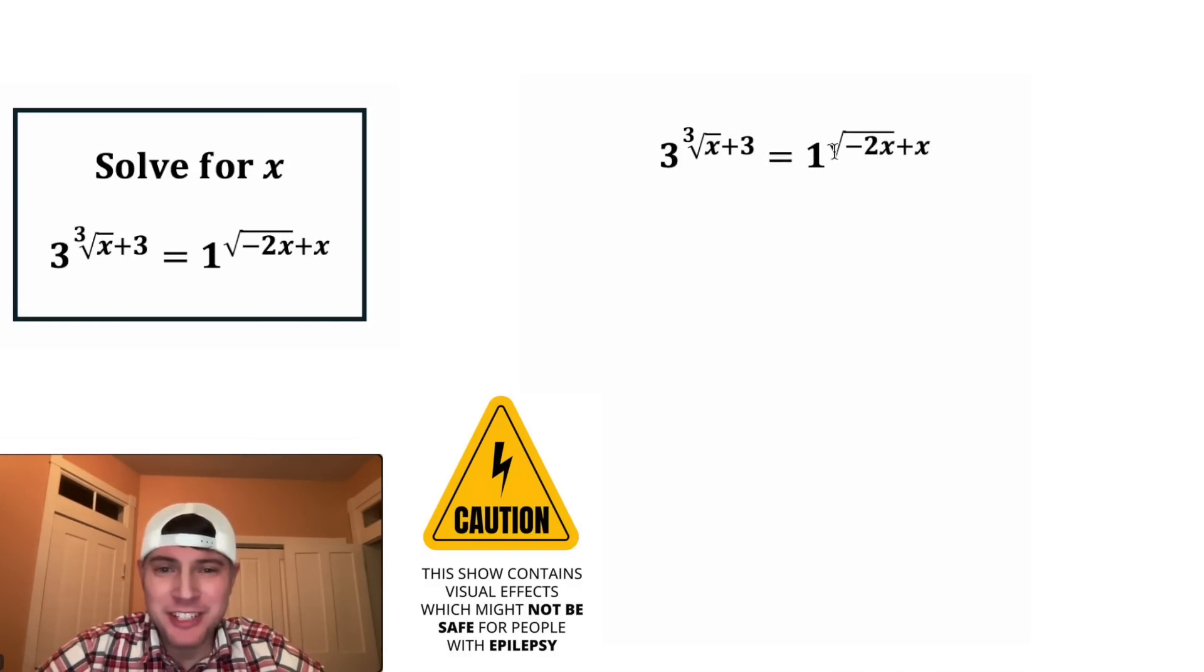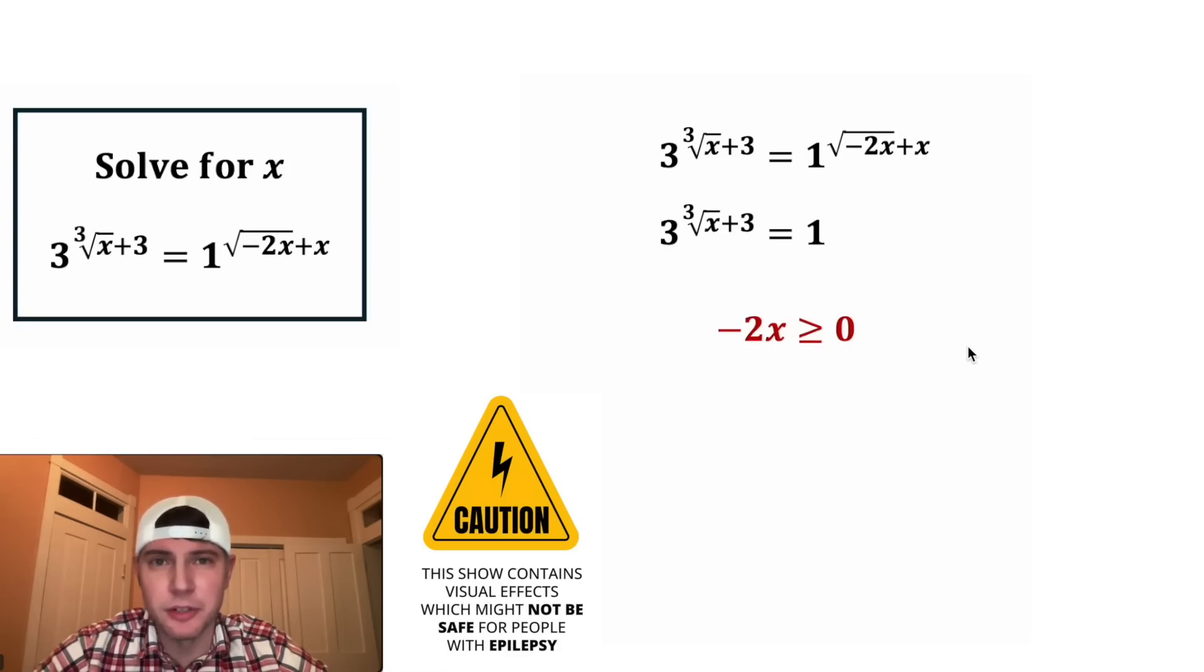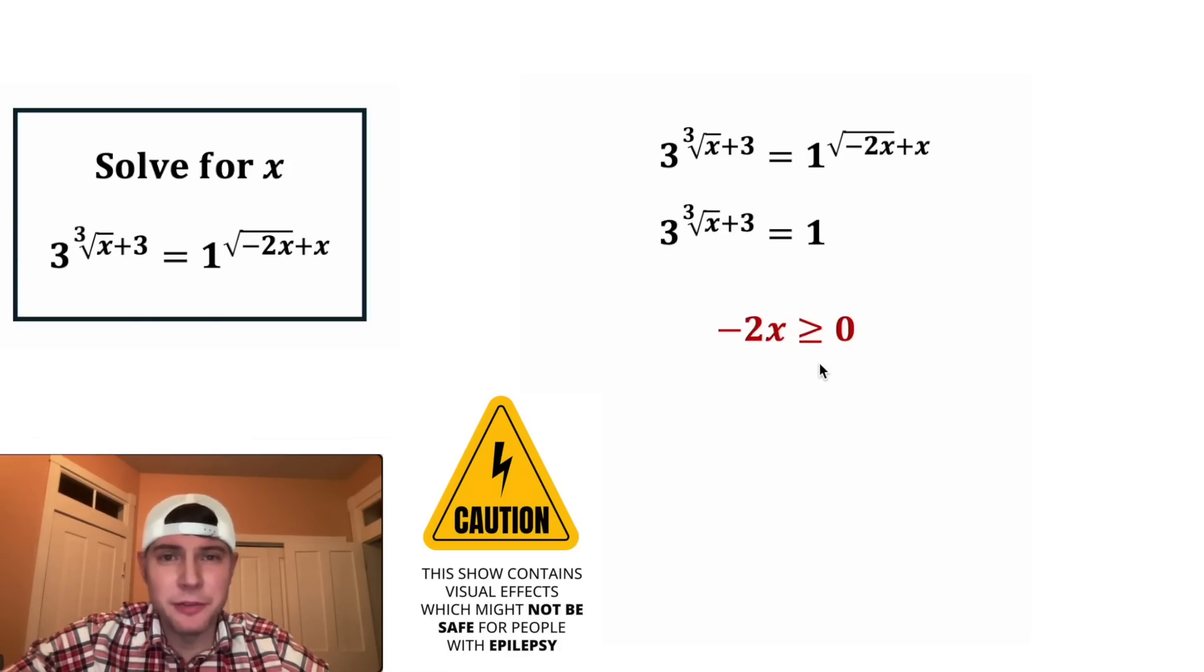So first thing I'm noticing is 1 to any finite power is gonna be just 1. So we can just write this like this, but we do have a domain restriction. We can't have a negative number inside of this square root. So we need negative 2x to be greater than or equal to 0. This is gonna be our domain restriction.